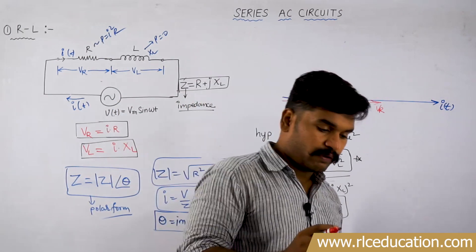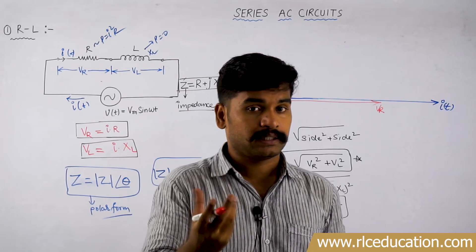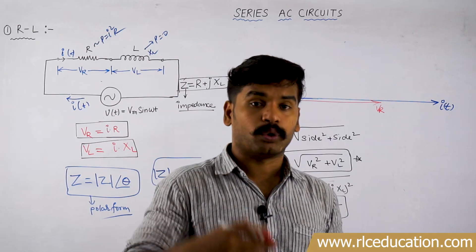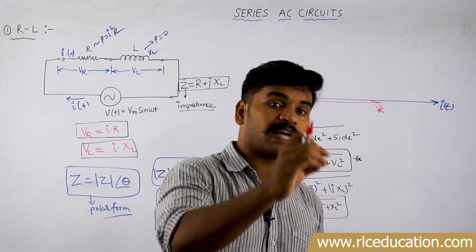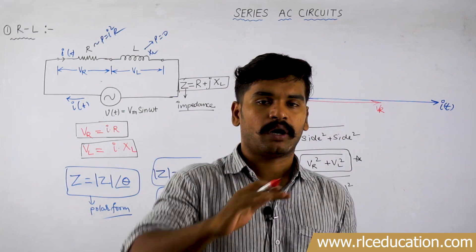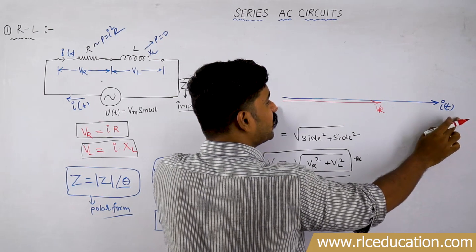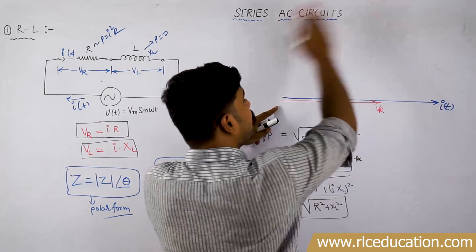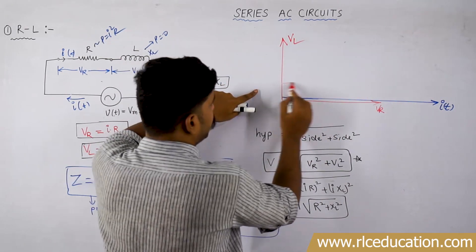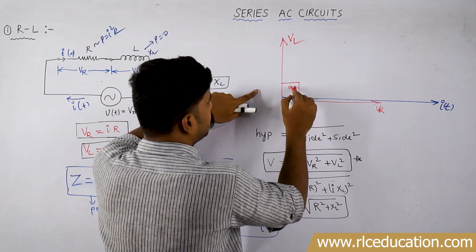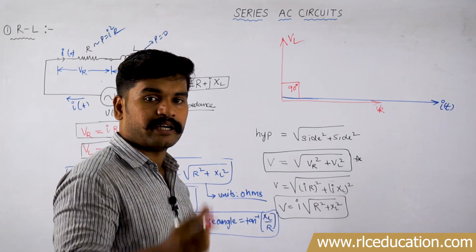Next, for the voltage across the inductor: we have already described the phasor relationship between current through the inductor and voltage across it — they are separated by 90 degrees. In an inductor, voltage is first and current is last, meaning current lags voltage by 90 degrees, or equivalently voltage leads current by 90 degrees. So voltage VL is drawn 90 degrees ahead of the current. This gives us the phasor relationship between VR, VL, and the current.